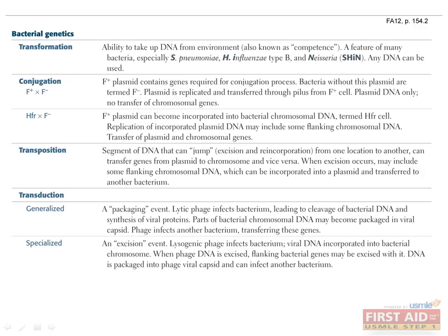Bacterial genomes consist of a single haploid chromosome and extra-chromosomal elements such as plasmids and bacteriophages. These genetic elements may be independent of the bacterial chromosome and can be transferred from one bacterium to another via transformation, conjugation, or transduction.